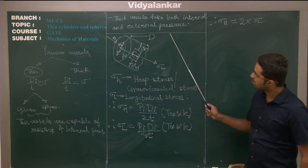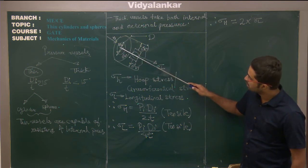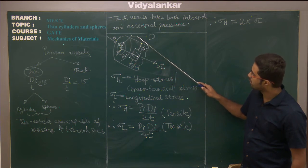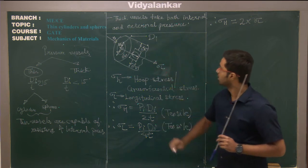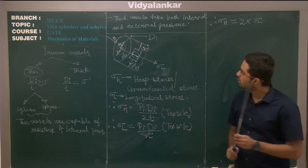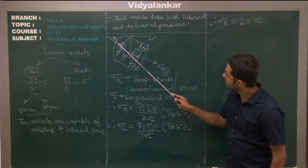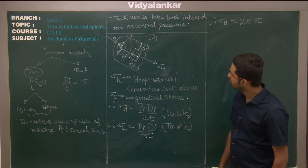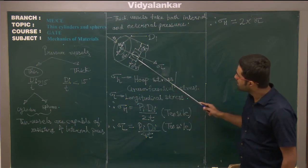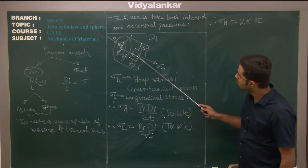Now, if you see this diagram, I have taken a cylindrical structure. This is the internal diameter, given as di. We have the internal diameter here as di. You can also see the thickness of the cylindrical vessel. I have taken a planar element on the outer surface of the cylinder — an infinitesimal planar element on which I have shown some stresses.